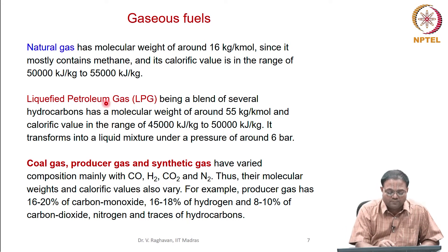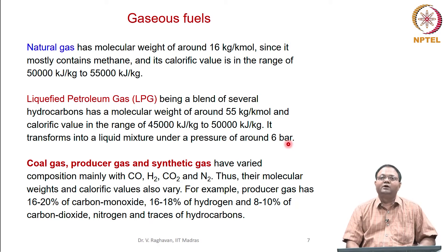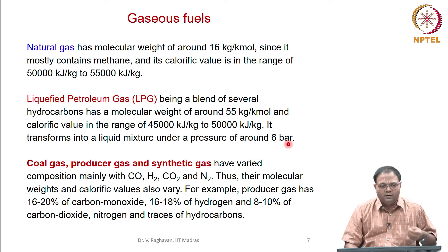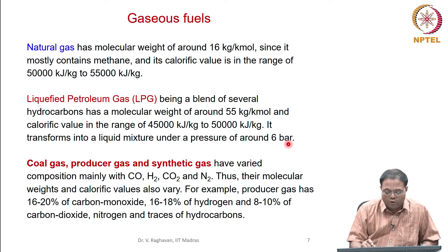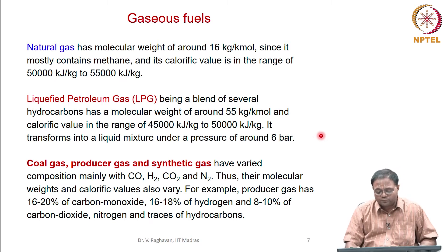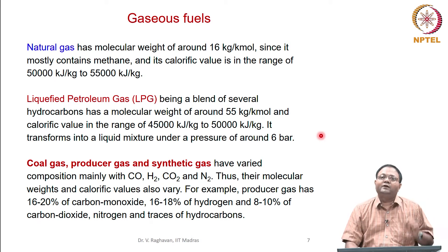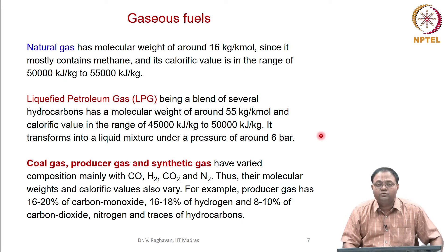When petroleum gas — a mixture of several gases — is compressed to about 6 bar, it liquefies. This liquid can be stored in tanks, and a simple regulator releases it; when the pressure drops to atmospheric pressure, the liquid vaporizes instantaneously to gas. Very low pressures of about 6 bar can store these gases as liquid, which can also be used for automobile applications apart from cooking.